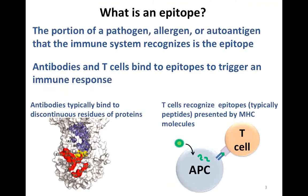So what is an epitope? Starting at the very beginning — it's the portion of a pathogen, allergen, or autoantigen that the immune system recognizes. Antibodies and T cells have to bind to these epitopes to trigger an immune response. When antibodies and T cells bind their epitopes, it triggers an immune response that either protects you, causes an allergic reaction, or causes an autoimmune disease.